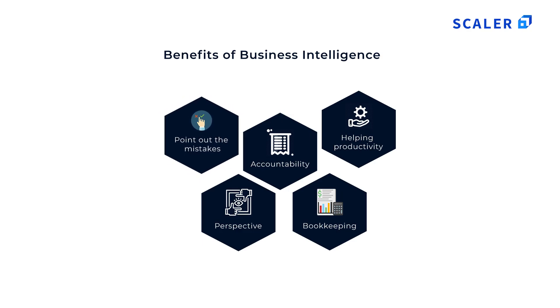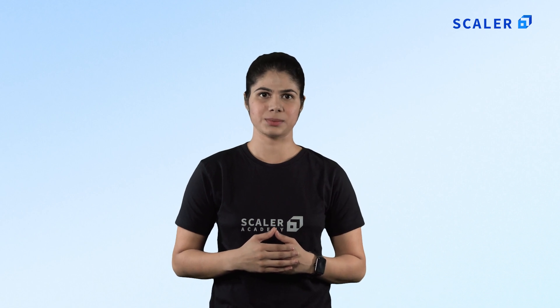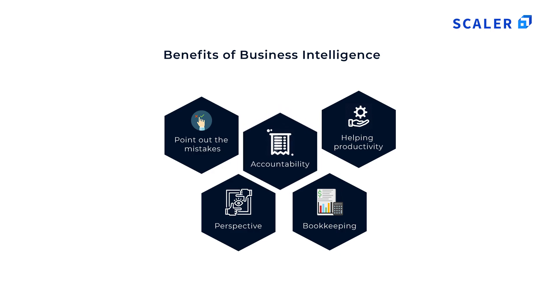Point out the mistakes: one great thing about the comprehensive set of tools is that it will highlight the mistakes. The areas that need more attention and detail will be pointed out without doing much work. Accountability: if you are doing something, someone must be responsible for it. If you are not responsible for your actions, the BI system will show whether that is good or bad based on the statistics.